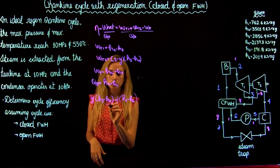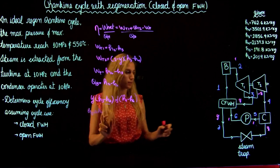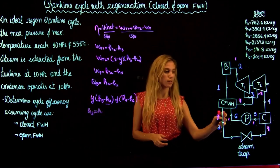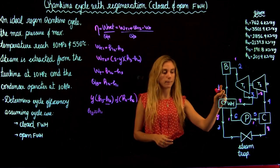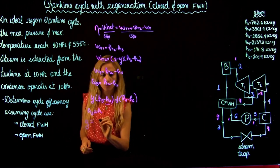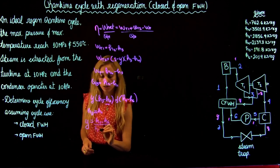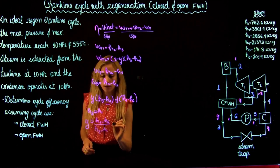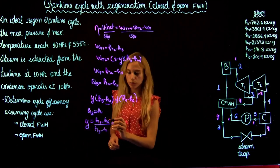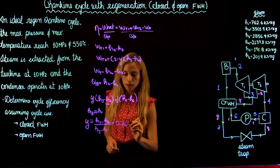We can assume that HA is very close to the enthalpy at state 1. Then we can find the mass fraction Y, which is equal to (H1 minus H6) over (H3 minus H1). That gives us a value for Y of 0.268.